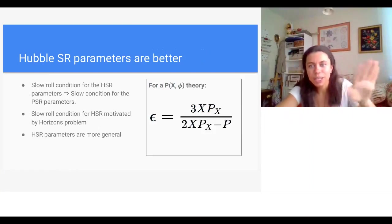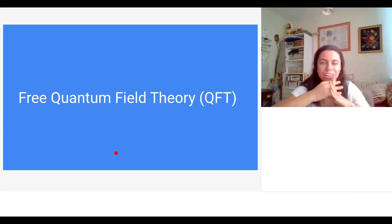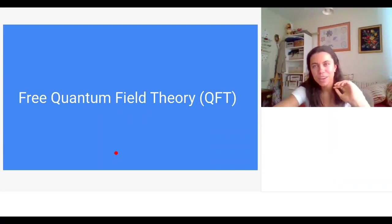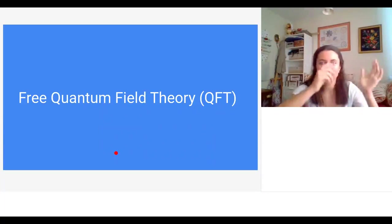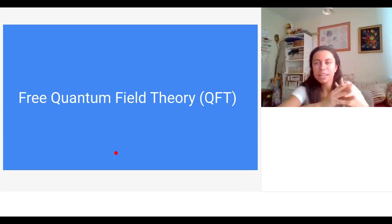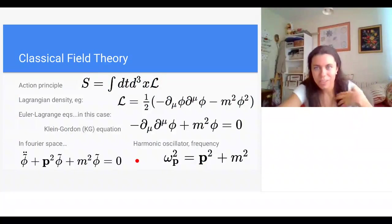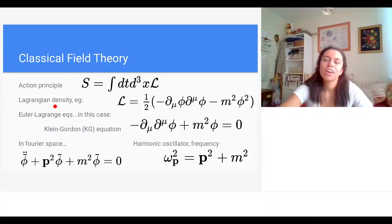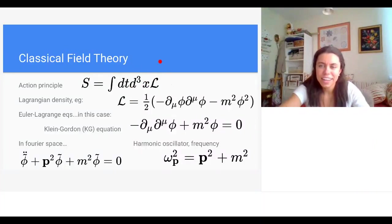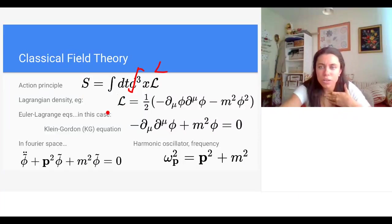To understand why de Sitter gives scale invariance, we need a brief introduction to quantum field theory — first on Minkowski spacetime, then generalizing to FRW spacetime. In classical field theory, our action comes from a Lagrangian density; the Lagrangian is the spatial integral of the Lagrangian density. A common choice of Lagrangian density leads via the Euler-Lagrange equations to the Klein-Gordon equation as the equation of motion.